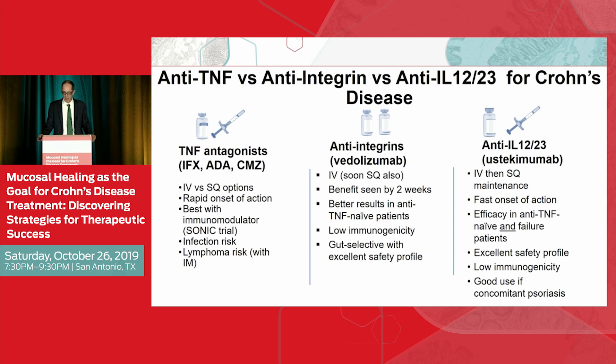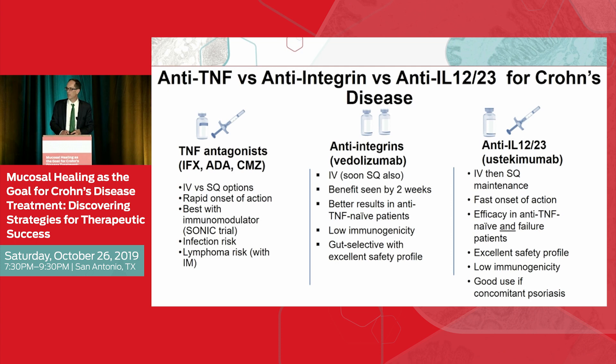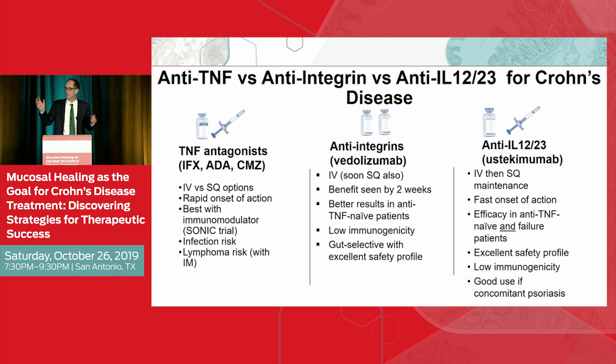There is low immunogenicity with vedolizumab, so as I mentioned, we're using it as a first-line agent in monotherapy without combination. It is gut selective and has an excellent safety profile. When do I add 6-MP, azathioprine, or methotrexate? If it's their third or fourth biologic and they're antibody formers to prior agents, or if it's a very refractory patient and I'm looking for two different mechanisms of action — those are the scenarios where I'll use combination with vedolizumab. Otherwise, it works very well in monotherapy.